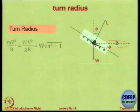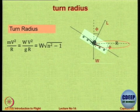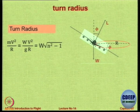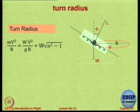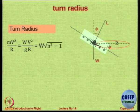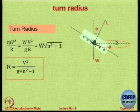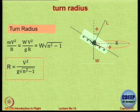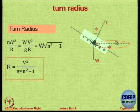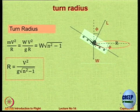Let us look at the turn radius. The centripetal force is mv²/R; replacing M with W/g gives (W/g)·(v²/R). The radius of turn is directly proportional to the square of the velocity and inversely proportional to the square root of (n²−1), with g being a constant.